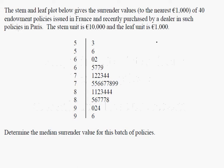What we're going to look at here is a stem and leaf plot. It's a way of presenting frequency data. And what we have here is surrender values, which is an actuarial term, to the nearest 1,000 of 40 endowment policies issued in France and recently purchased by dealers. So this is a very financial example.